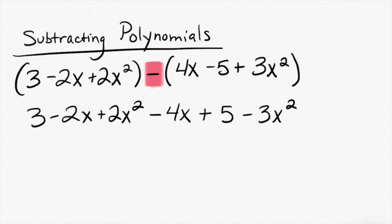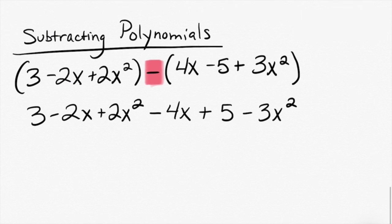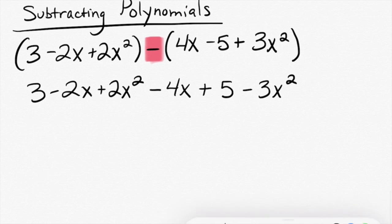Now we're ready to combine our like terms. Some of you I noticed as I was watching you do the last one, instead of starting at the beginning of the problem with the 3 and going left to right, you started with the highest exponent so that when you wrote it, it was already in the right order. And I think that's really smart. That's a good time saver. So look at this polynomial. What's the highest degree that we have? Good. So the highest degree is 2.